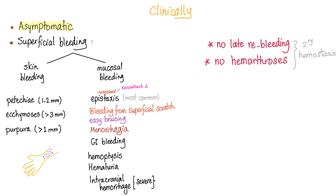Superficial bleeding due to a platelet problem is either skin bleeding or mucosal bleeding. Skin bleeding includes petechiae — very small, 1–2 millimeters — larger are called ecchymosis, more than 3 millimeters, and the largest is called purpura, more than 1 centimeter. Mucosal bleeding includes epistaxis (nosebleed), most commonly from Kiesselbach's triangle, bleeding from superficial scratches like a pinprick or paper cut, easy bruising, menorrhagia, GI bleeding, hemoptysis, and hematuria. When severe, intracranial hemorrhage can occur — but no deep bleeding and no hemarthrosis.